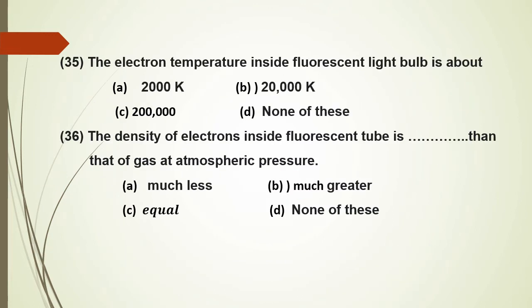The electron temperature inside a fluorescent light bulb is about 20,000 K. The density of electrons inside the fluorescent tube is much less than atmospheric density — it is in a much lower range.